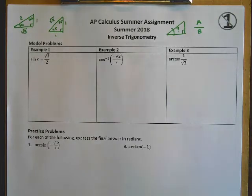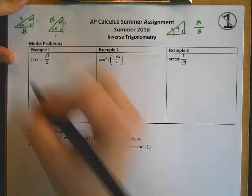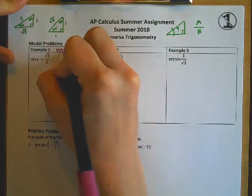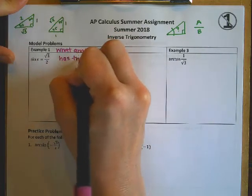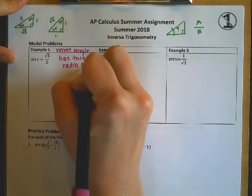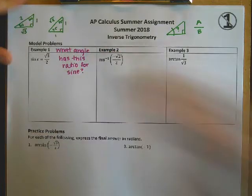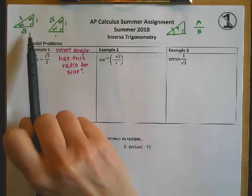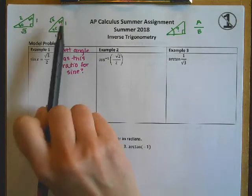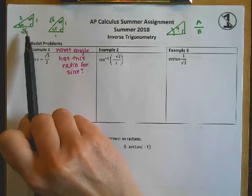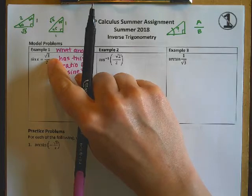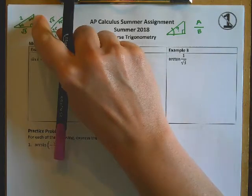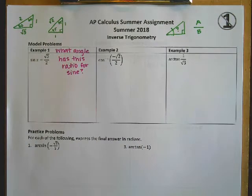And so I'm looking at this first question here, sine of x equals root 3 over 2. And again, this question that I'm asking is, what angle has this ratio for sine? Now, when I'm looking at my two kinds of triangles here, which one has a root 3 and a 2? This one. So this must be the kind of triangle that's creating this ratio. And so I need to figure out, is my answer 30 degrees or 60 degrees for which one's going to have a sine of that angle to be root 3 over 2.